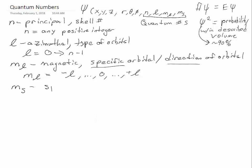m sub s is the spin quantum number. This just specifies a specific electron up or down, and the values are plus or minus one-half.